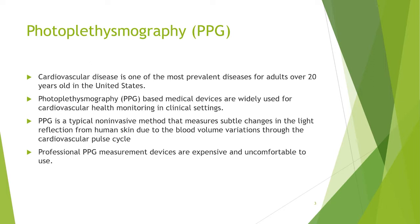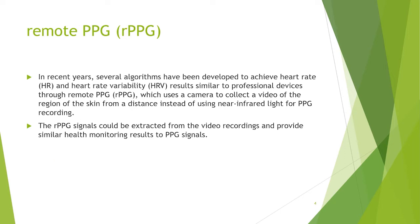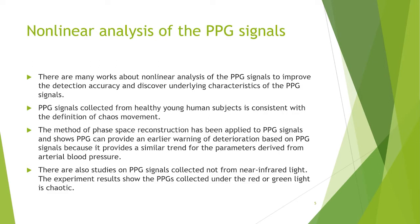However, professional PPG measurement devices are expensive and uncomfortable to use. In recent years, several algorithms have been developed to achieve heart rate and heart rate variability results similar to professional devices through remote PPG, which uses a camera to record a video of a region of skin from a distance instead of using near-infrared light for PPG recording. The RPG signals could be extracted from video recordings and provide similar health monitoring results to PPG signals. There are many works on nonlinear analysis of PPG signals to improve detection accuracy and discover underlying characteristics.